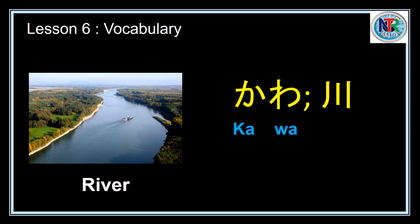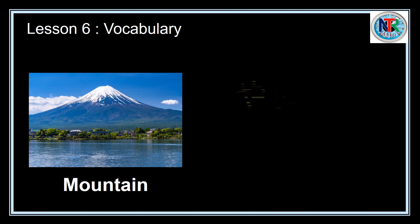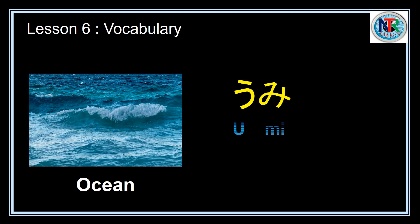Kawa means river. Beside, this is kanji symbol. Important for JLPT test. Yama. Yama means mountain. And beside, this is kanji yama. This is also important for JLPT test. Umi. Umi means ocean.